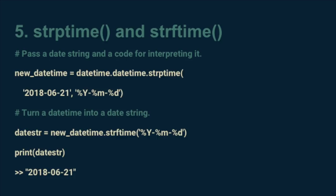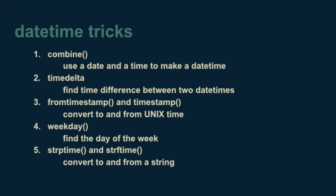So now you're armed with the five most useful date time tricks: Combine, time delta, converting to and from timestamps, weekday, and string formatting. With these in your toolbox, you're 90% of the way towards solving all of the date and time challenges in your next Python project. Good luck, and may it serve you well.